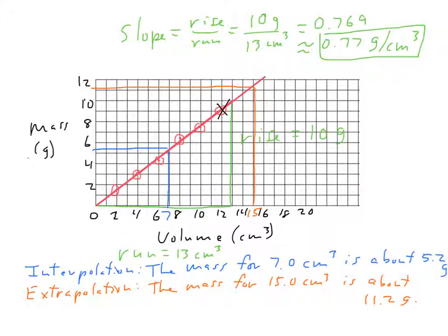And then I made a best fit line, and I took the slope of that best fit line. You can see that I did that here in green. The slope is rise over run, so it's a height of 10 grams, it's a run of 13 centimeters cubed. Do the math, you get 0.769, which I'm going to round to 0.77 grams per cubic centimeter. So I found the density of that material by taking the slope of the line.